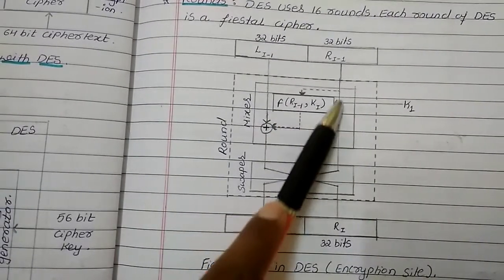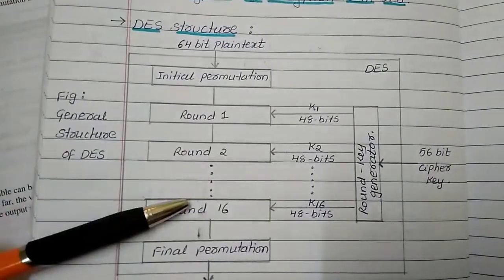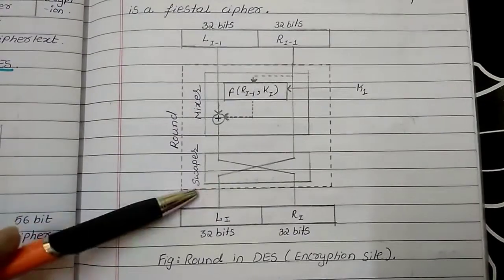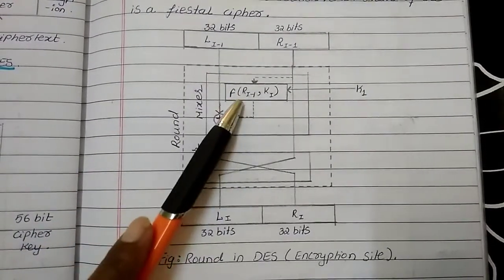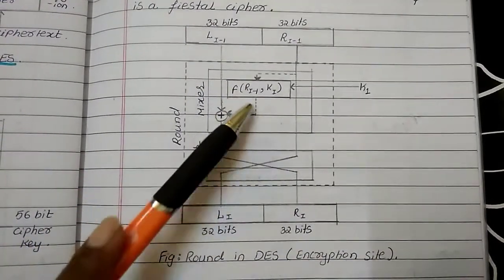Now, let us see what exactly this function is. Do remember we have seen the DES structure which was having 16 different rounds. And each round, this particular function is happening wherein mixer and swapper is going to take place on the function F of Ri minus 1, Ki.